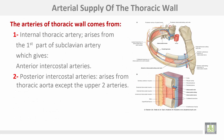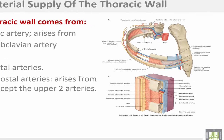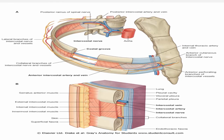The arterial supply of the thoracic wall comes from the internal thoracic artery, which arises from the first part of the subclavian artery and gives anterior intercostal arteries. Posterior intercostal arteries arise from the thoracic aorta, except for the upper two. Anterior intercostal arteries for the upper six spaces arise from the internal thoracic artery. The neurovascular bundle runs in the subcostal groove — vein, artery, and nerve from above downward.